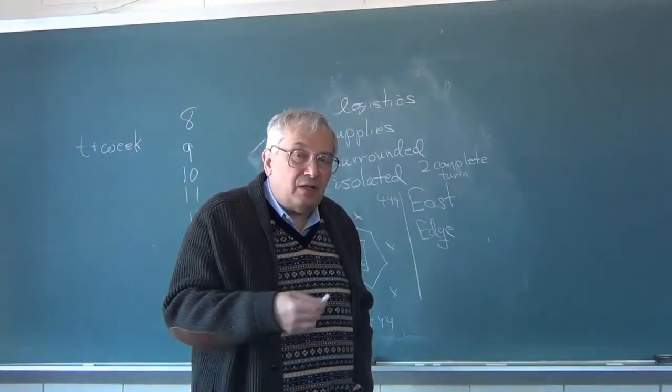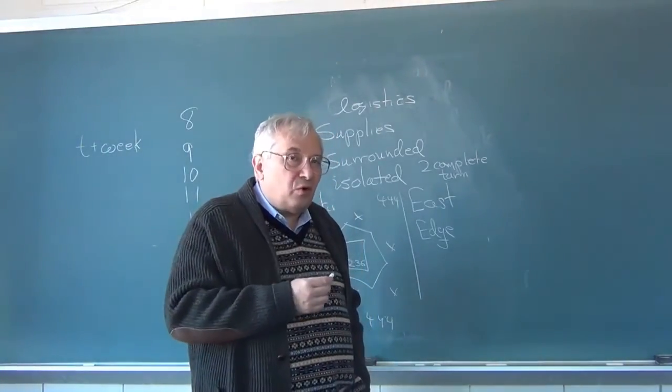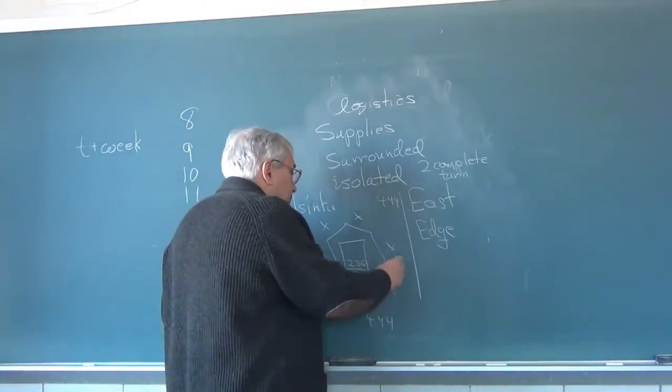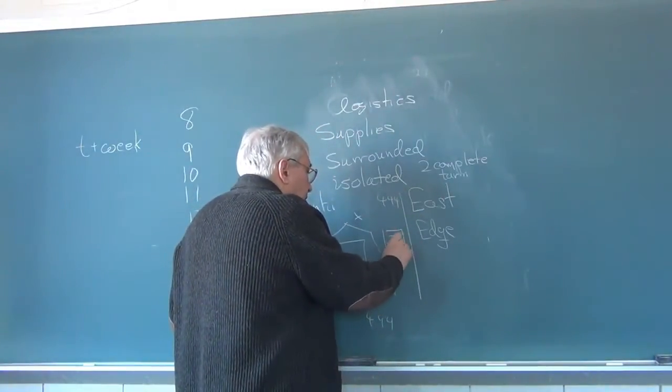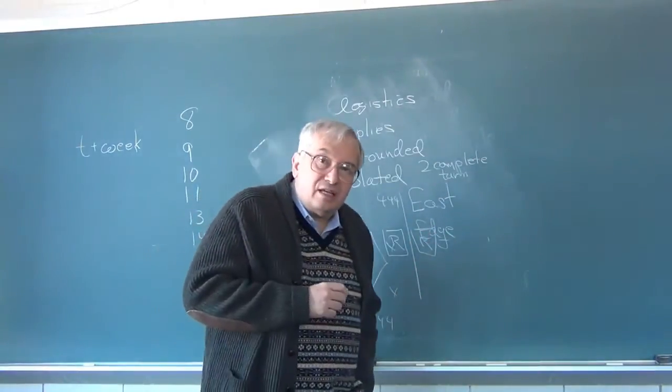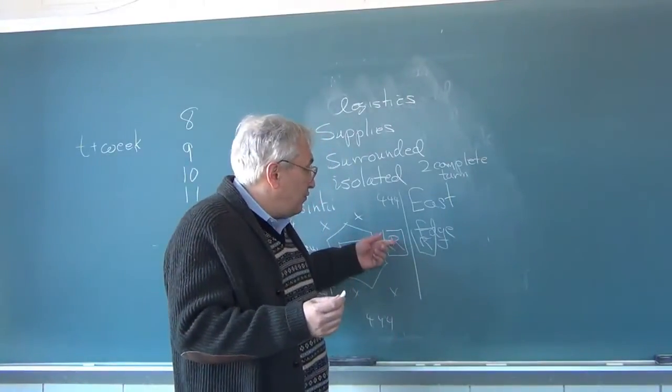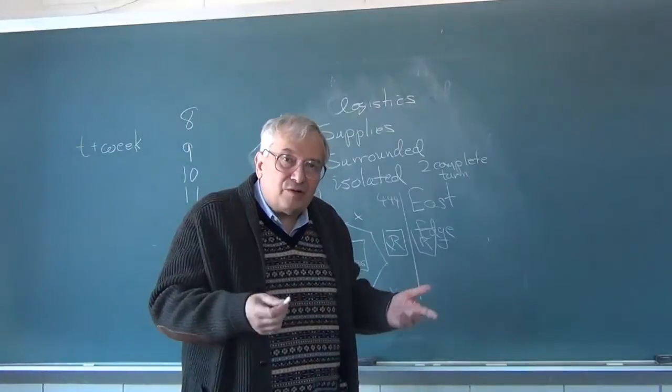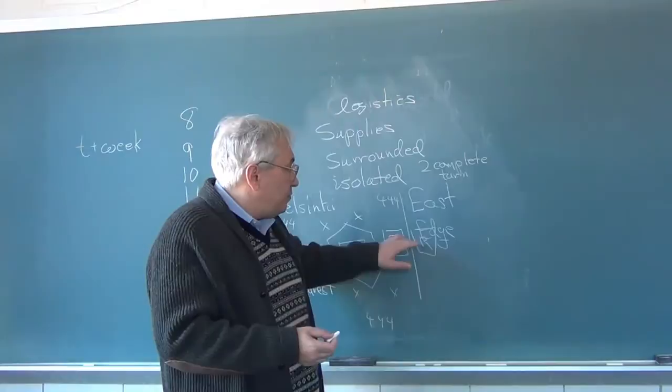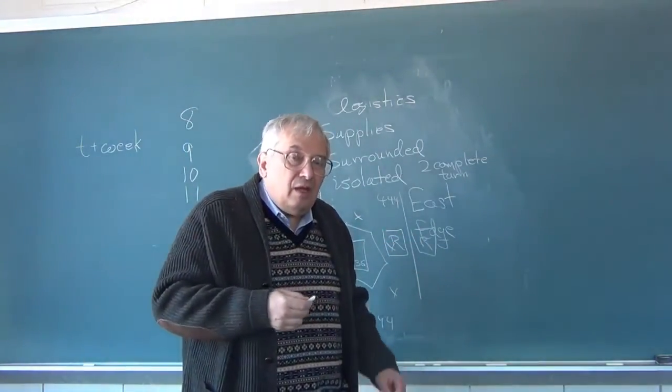The unit cannot be supplied through an enemy zone of control, through a body of water, neutral countries, edge of the board and so forth. You might ask, well, suppose there were a line of Russian units like this. What does that say about the supply? And the answer is nothing. There is a German zone of control here whether there is a Russian unit on the square or not. This unit would still be out of supply even if there were Russian units parked over here. Okay, that's supply for units.